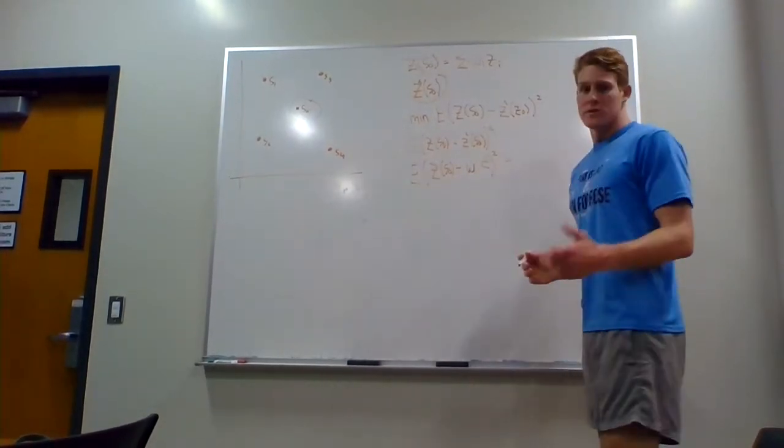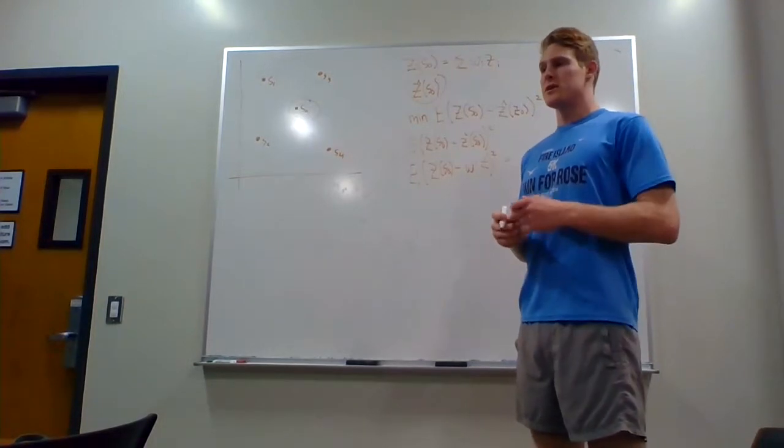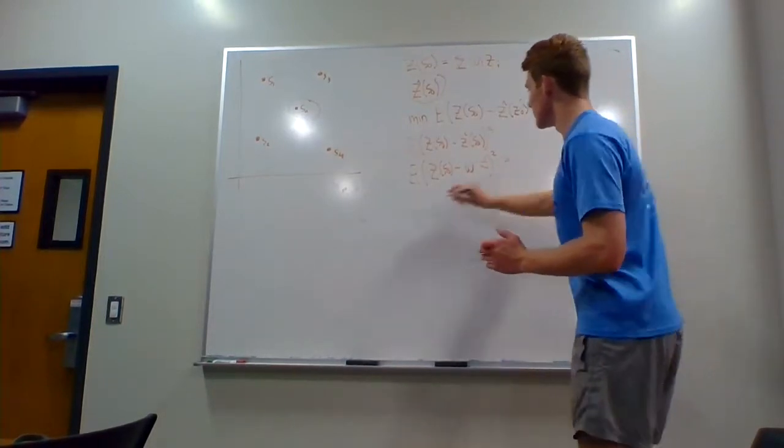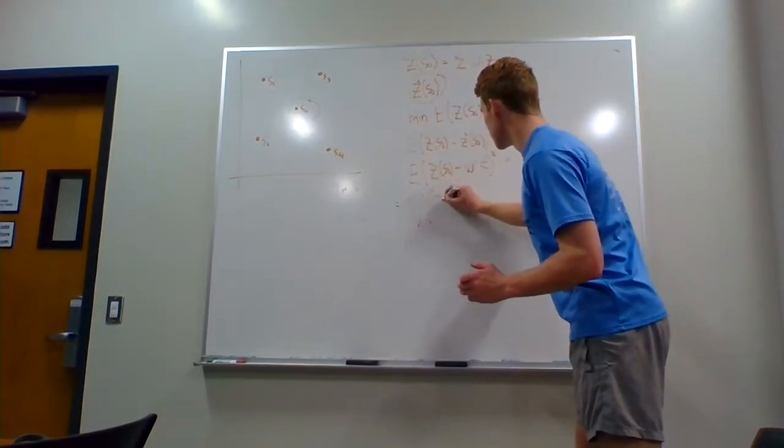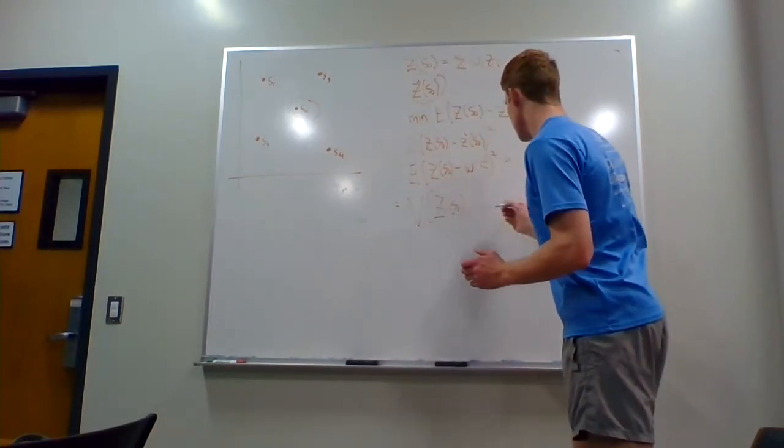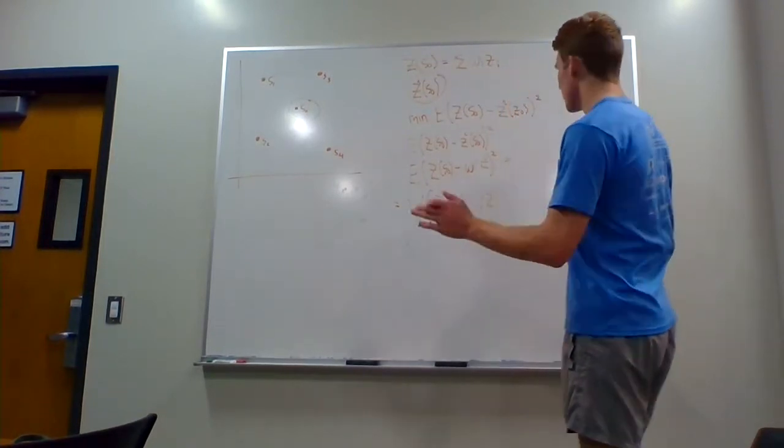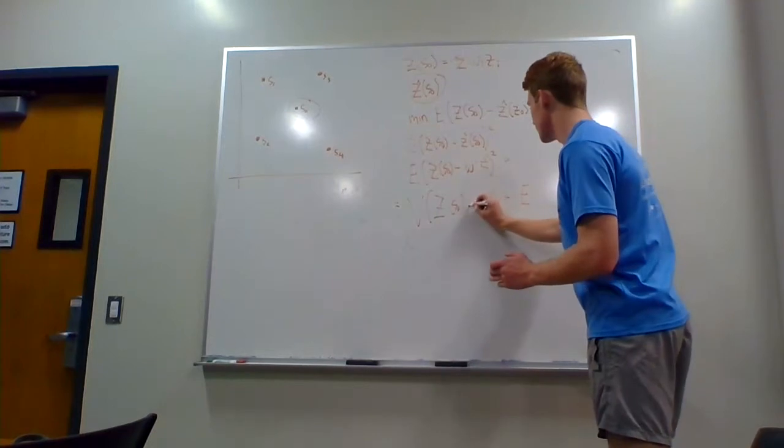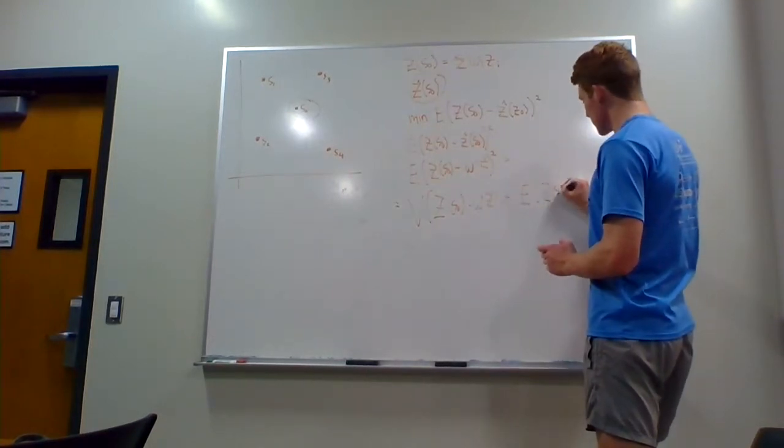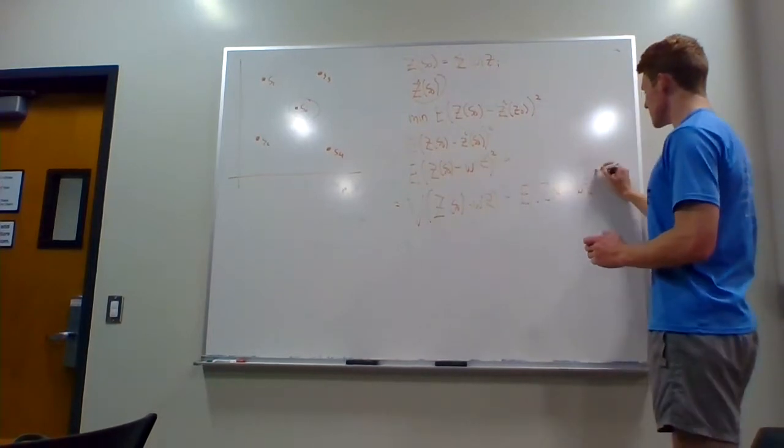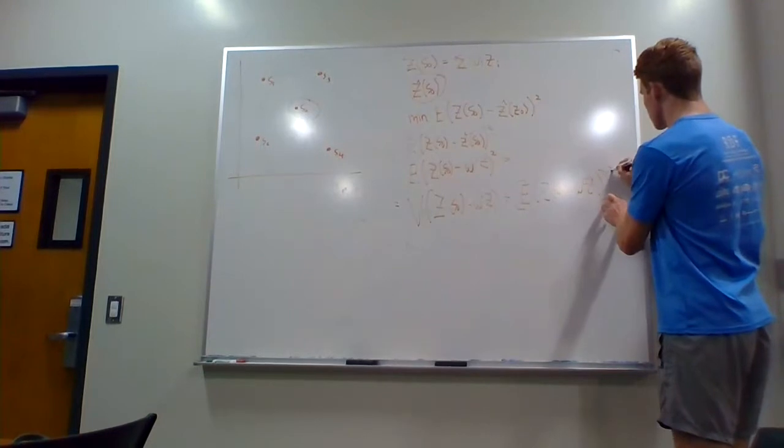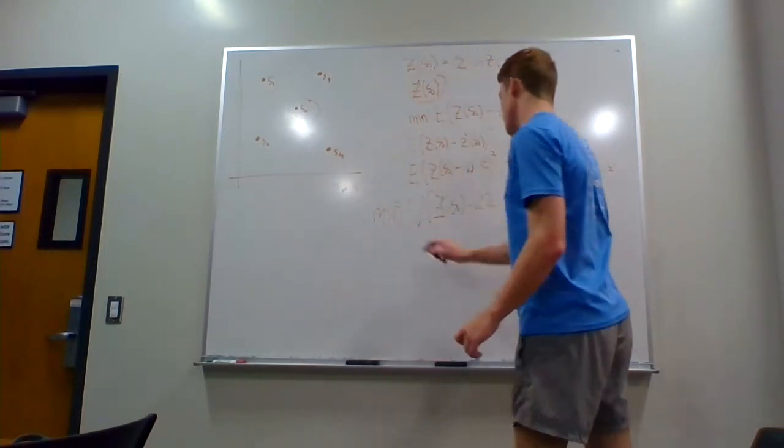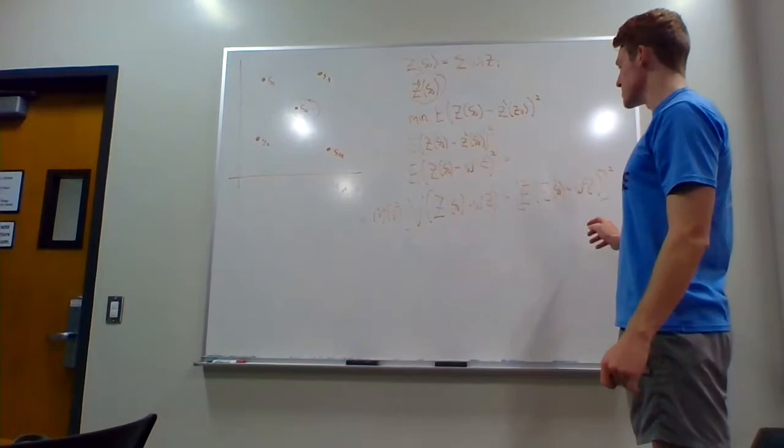So now we want to simplify this even more. We know that expected value of X squared is equal to the variance of X plus the expected value of X in parentheses squared. I'll write that out right here as the variance between Z of S zero and W prime Z. And then that's going to be plus, sorry, this is supposed to be minus, the expected value of Z of S zero minus W transpose Z, and then all of this is squared. So minimizing this expression is the equivalent to minimizing this expression here, which we're going to do in the next video.